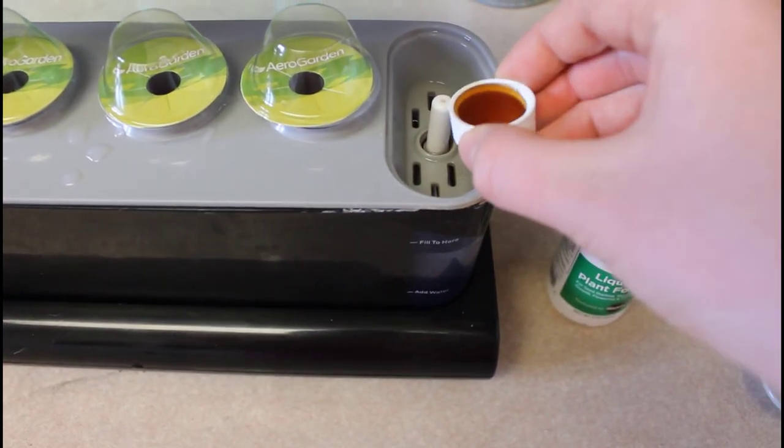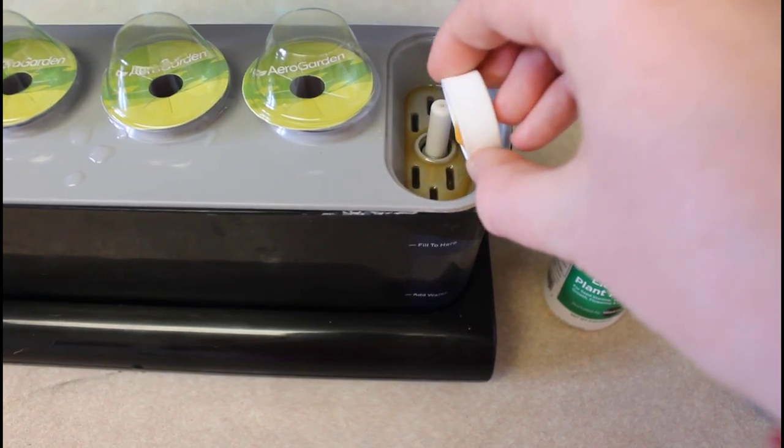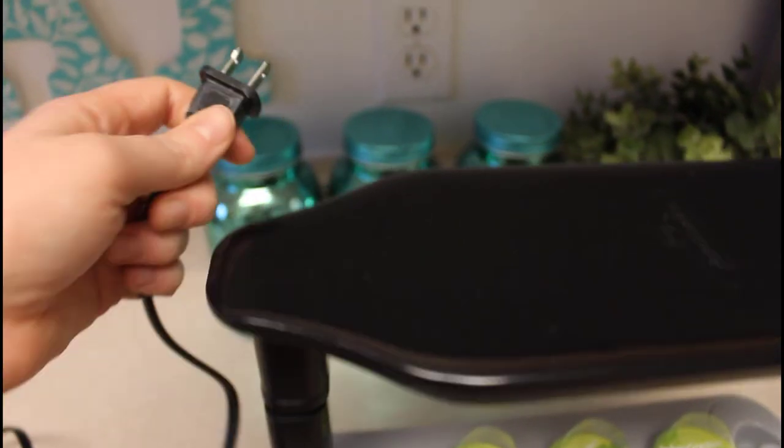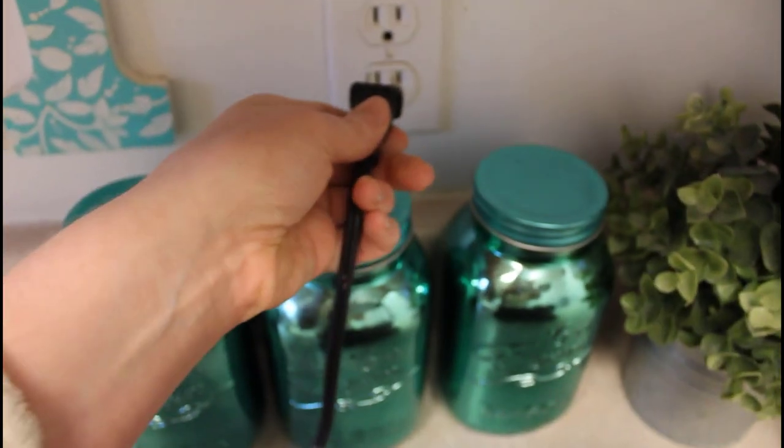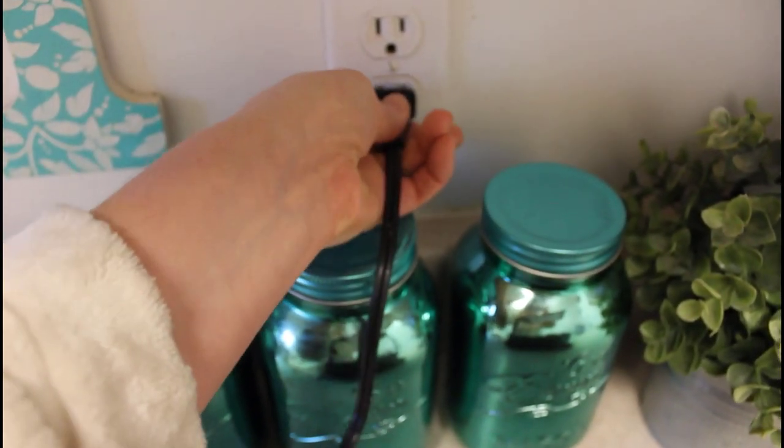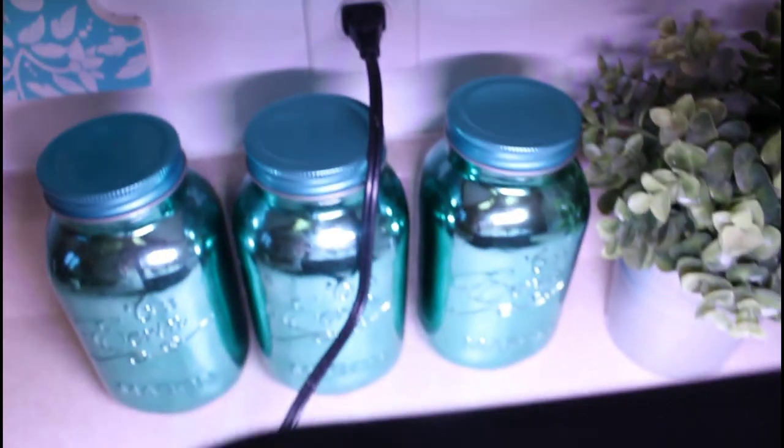Once that's done, the last step will be adding plant food to the water. Like I said earlier, you can follow the instructions here. Last but not least, simply plug in your AeroGarden and turn it on. Don't be alarmed by the bright light—it is a little shocking at first, but you definitely get used to it.